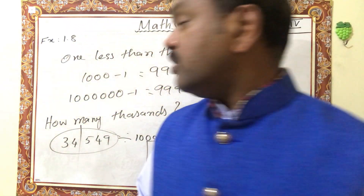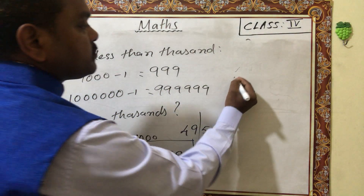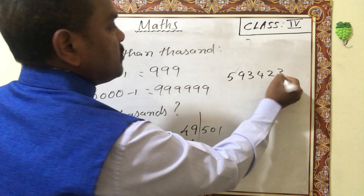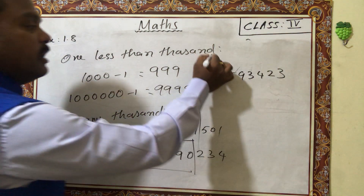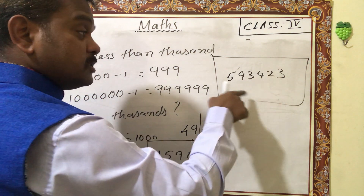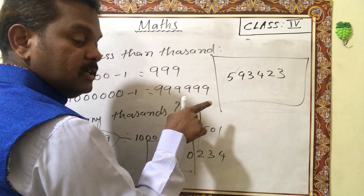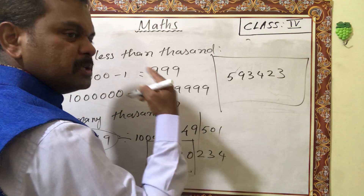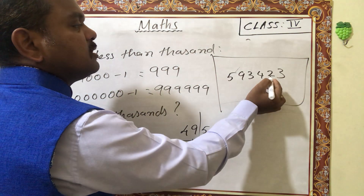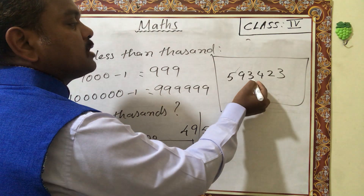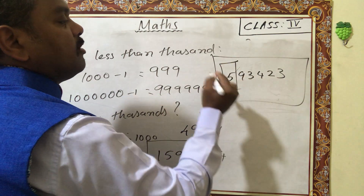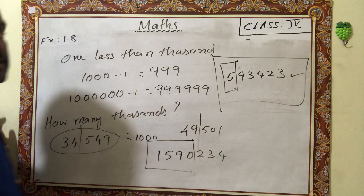Next question: how many lakhs are there in a given number? For this question you need to divide by lakhs, but no need for long division. Simply count the place values: ones, tens, hundreds, thousands, ten-thousands, lakhs. So there are 5 lakhs in this number.